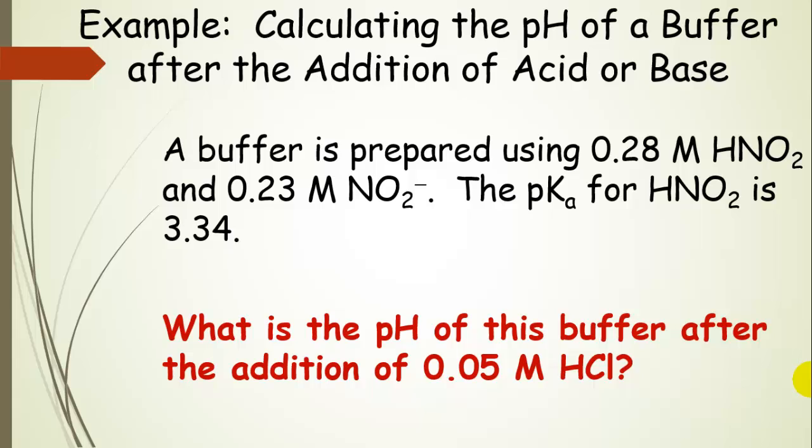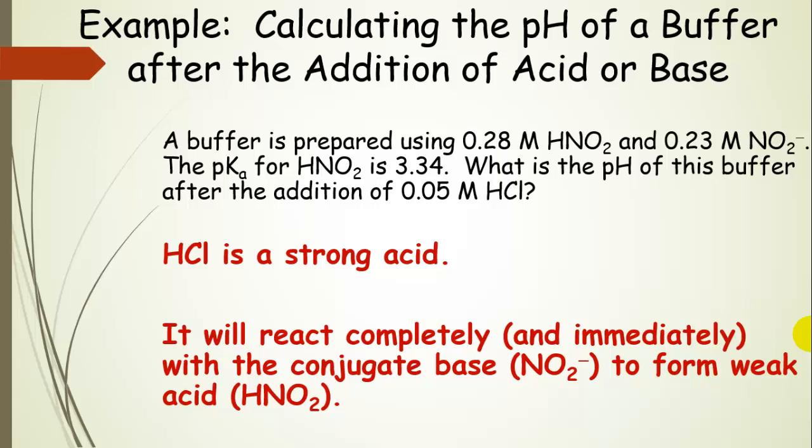What happens to the pH of this buffer if we add some hydrochloric acid? And so what we're going to do is add the acid, see what happens to the concentrations of each of these two species. And then we're going to use the Henderson-Hasselbalch equation again to get the pH after this addition of hydrochloric acid. And we're going to add 0.05 molar HCl. Now, one thing very important to keep in mind is that hydrochloric acid is a strong acid. So that means it's going to react completely and immediately with the conjugate base to form weak acid. So this proton is just going to be donated in equal concentration. So for every one of these, you're going to make one of these. So you are going to convert nitrite to nitrous acid after this addition of hydrochloric acid.